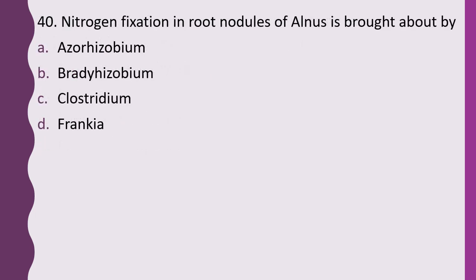Question 40. Nitrogen fixation in root nodules of alnus is brought about by: Azorhizobium, Bradyrhizobium, Clostridium, or Frankia. The correct answer is option D, Frankia.